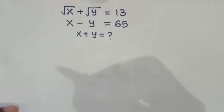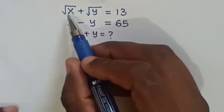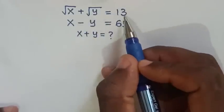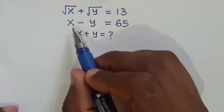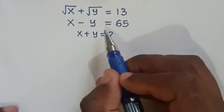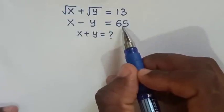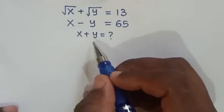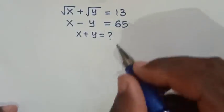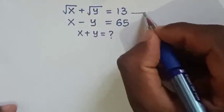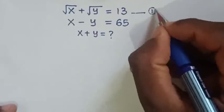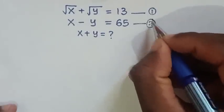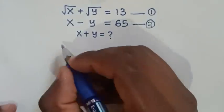Hello! How to solve: square root of x plus square root of y is equal to 13, and x minus y is equal to 65 — to find the value of x plus y. We let the first equation be equation 1 and the second equation 2.